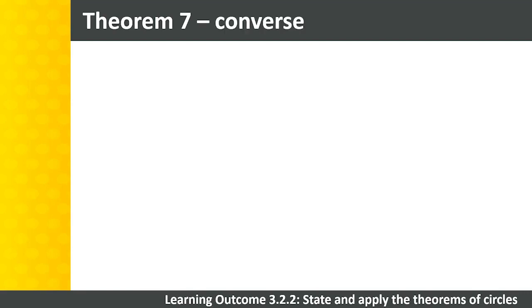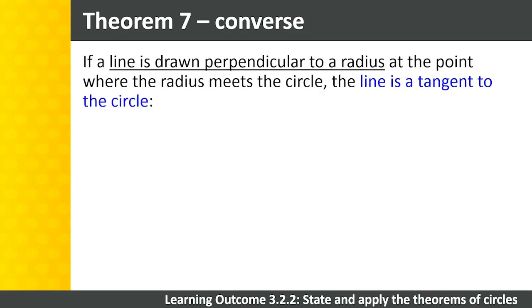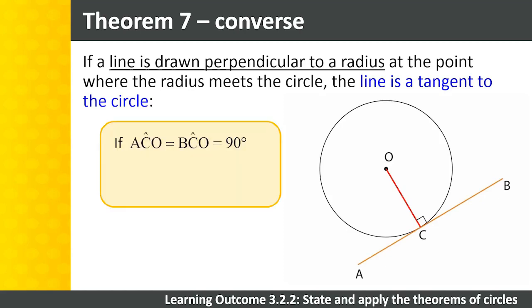The converse states: if a line is perpendicular to the radius at the point where the radius meets the circle, the line is a tangent to the circle. In our diagram, radius OC is perpendicular to line AB at point C. Therefore, line AB is a tangent to the circle. The abbreviation to use for this theorem is line perpendicular to radius.